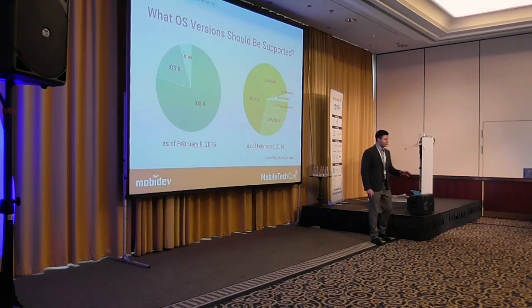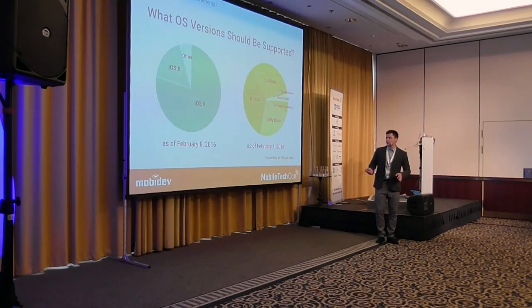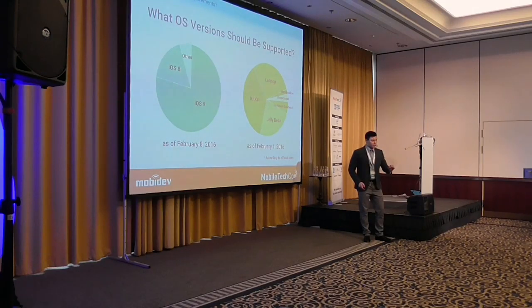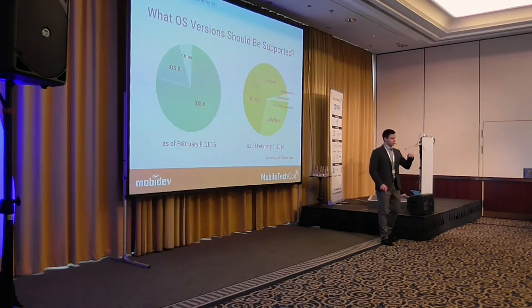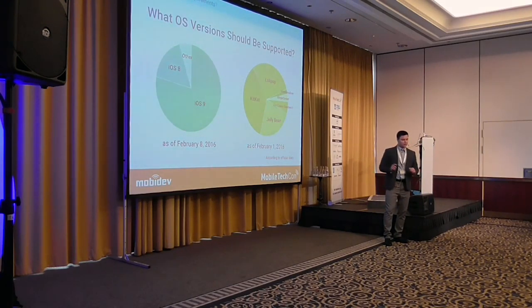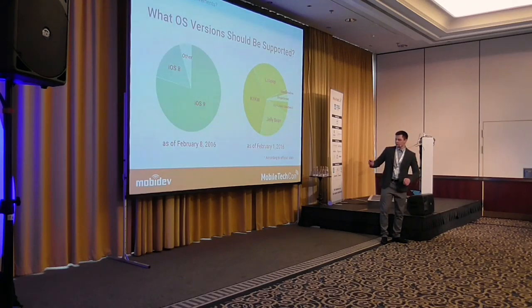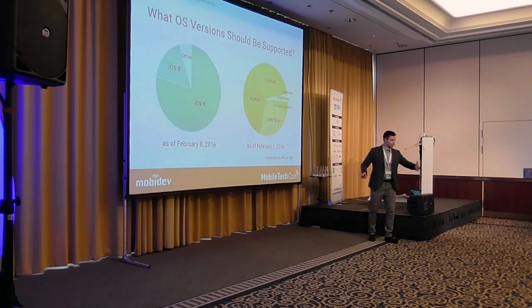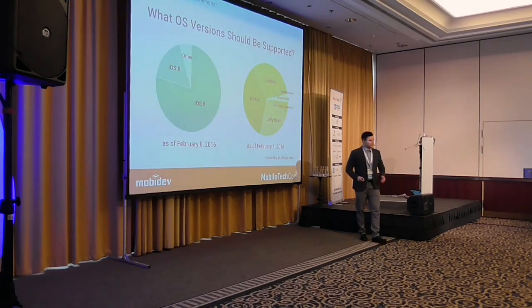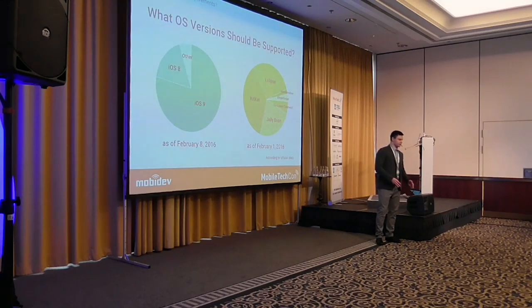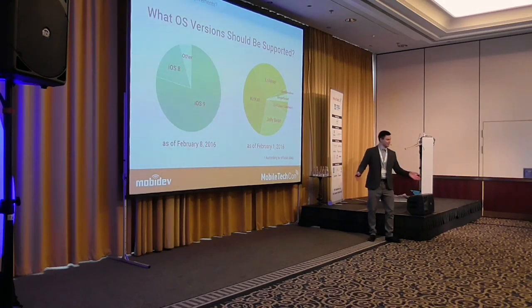What operating system version should be supported? Usually we advise customers to support two major OS versions, or maybe three for Android. However, it's necessary to choose the supported OS not for the moment of development, but for the expected release date. If the application is estimated to take one year, iOS 8 will be obsolete at launch. And it's impossible to evaluate supporting an OS version that doesn't exist yet, but it is possible to avoid supporting one that will be obsolete.